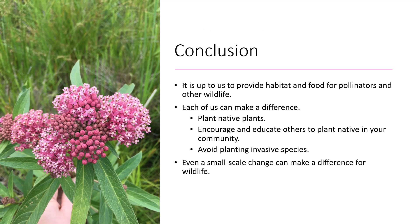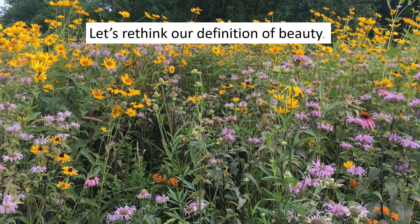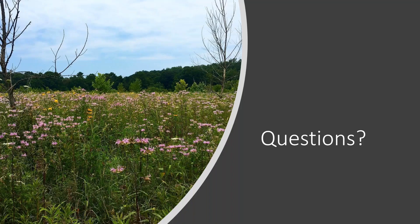In conclusion, it's really up to all of us to provide habitat and food for pollinators and other wildlife. Each of us can make a difference through planting native plants, encouraging and educating others to plant native in your community, avoiding planting invasive species, and removing existing invasive species from your landscape. Even a small-scale change is going to make a world of difference for wildlife. Let's rethink our definition of beauty — it doesn't have to be just lawn; these areas of native plants with wonderful blooming flowers that provide important resources for our wildlife are also beautiful and useful.